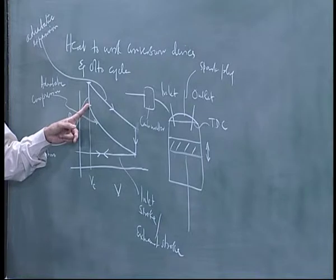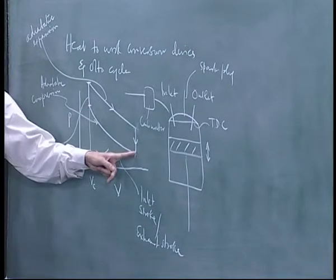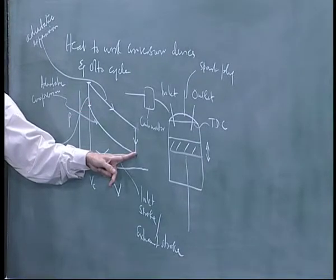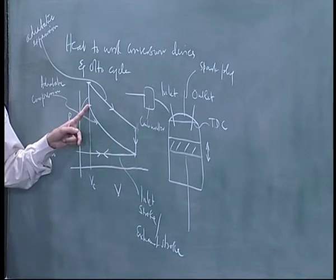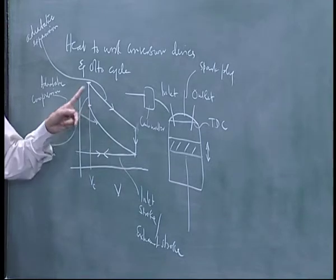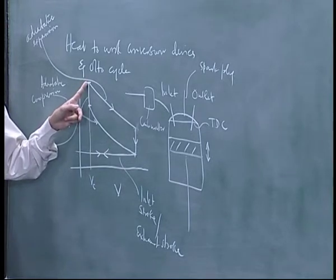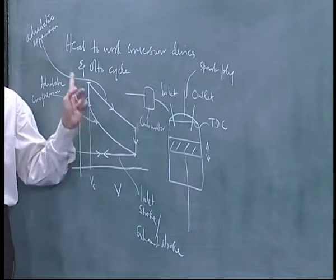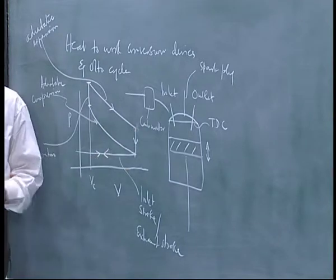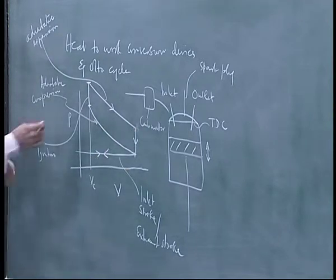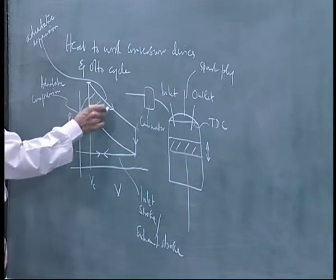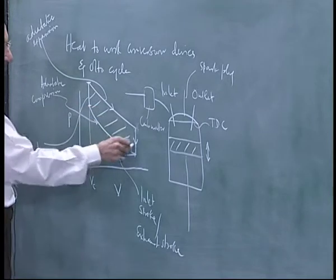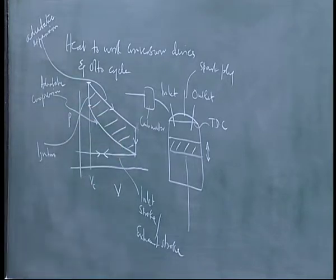The area under the compression curve is the work done on the system, which is why you need an electric motor to get the whole thing started — you crank the motor and it compresses first. Once heat addition occurs, there is enough energy and the cycle keeps going. The net work done is the area enclosed by the cycle on the P-V diagram.